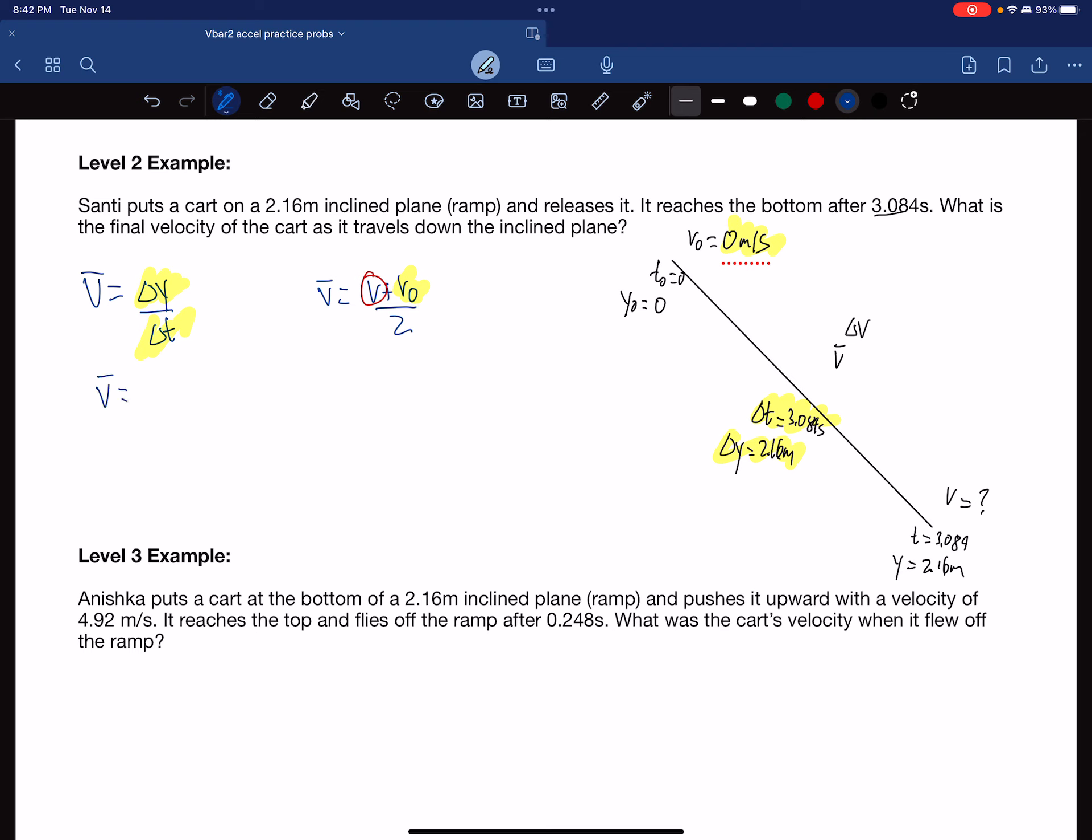So V bar is delta Y, 2.16 all over 3.084. And that gives us 0.7003891051.